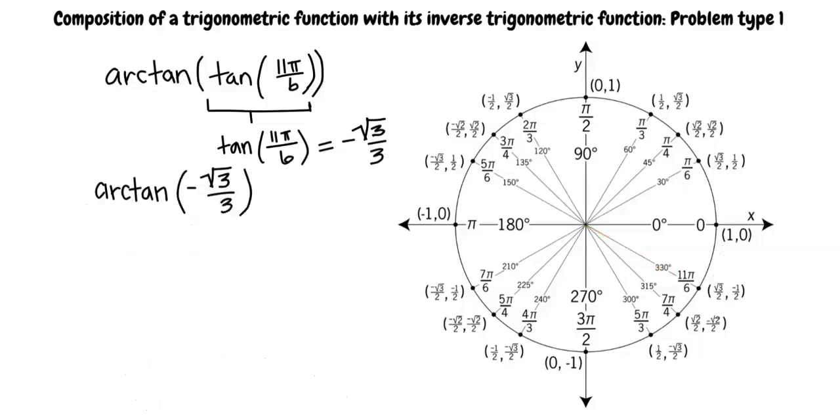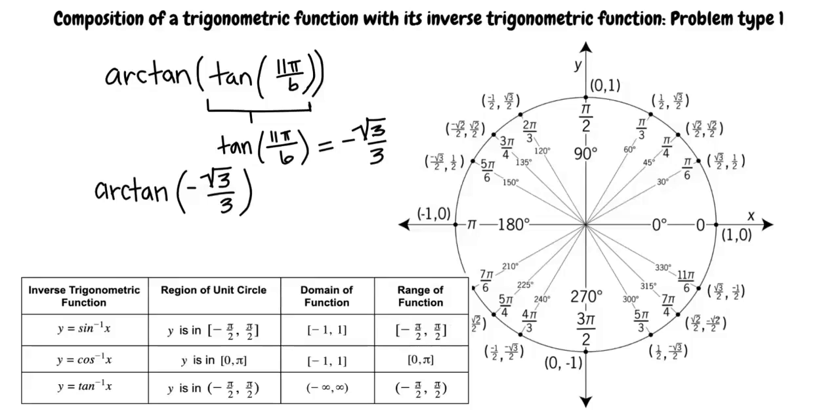Now, what is arctangent of negative square root of 3 over 3? Would it be 11 pi over 6? That would be the answer if there were no restrictions. However, arctangent is restricted to negative pi over 2 to pi over 2. Therefore, the answer would be negative pi over 6.